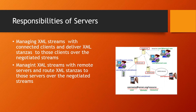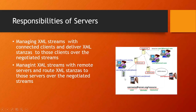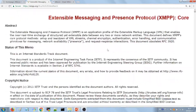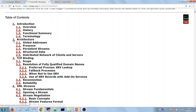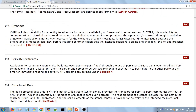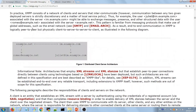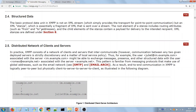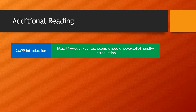That covers what we had to say about the XMPP architecture. You should now have a good idea of how XMPP is put together — you know about XMPP addresses for clients and servers, stanzas, and the responsibilities of clients and servers. Everything we've discussed is covered in section two of RFC 6120, which defines the XMPP architecture. You can go read about it there, and if you want more introductory material, there's a tutorial linked in the description below.